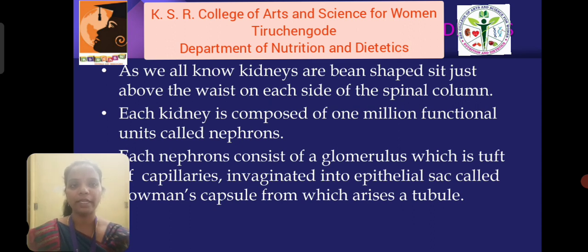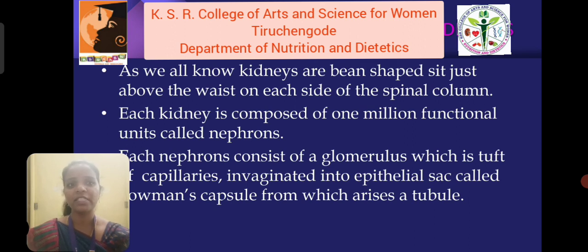As we all know, kidneys are bean-shaped and sit just above the waist on each side of the spinal column. Each kidney is composed of millions of functional units called nephrons. Each nephron consists of a glomerulus, which is a tuft of capillaries invaginated into an epithelial sac called Bowman's capsule, from which arises a tubule.